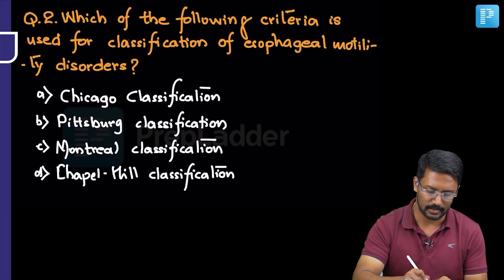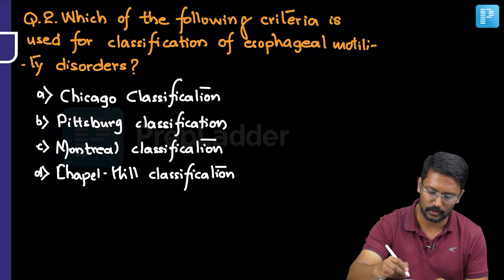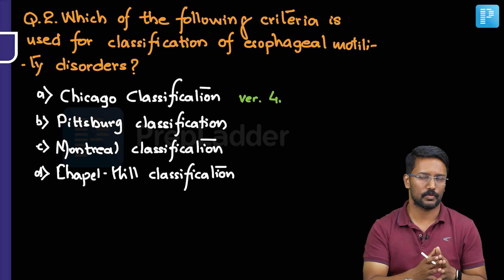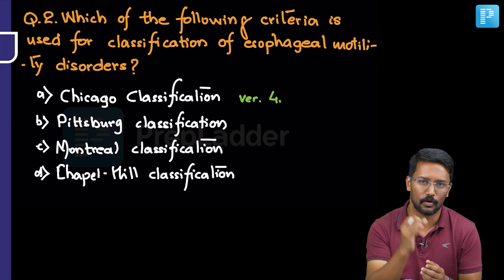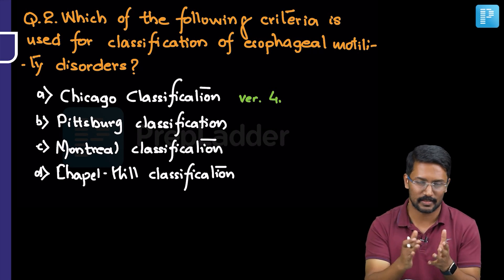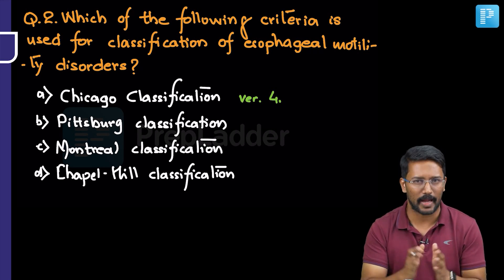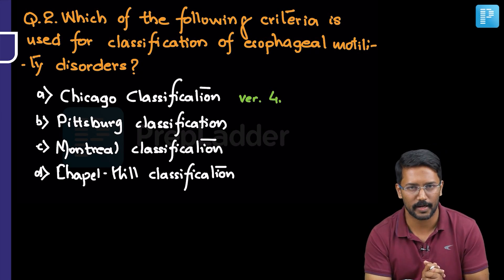We call this as Chicago classification and we all know right now we are following the version 4 of the Chicago classification from 2021. I do not think for another 3 or 4 years it is going to change whether you are in first year residency or probably you are giving your exam. You can bank on this, probably there will not be an update or revision.